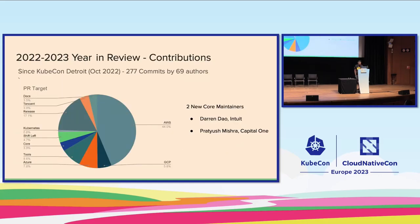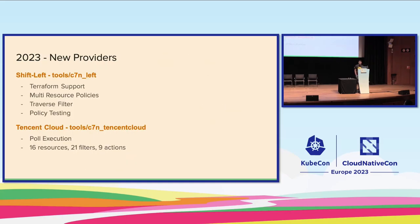Since last October, we've had about 70 authors contribute about 280 different commits across different resources and providers. We've added two new core maintainers: Darren Dow from Intuit and Patrush Mishra from Capital One. We've also added a few new providers — a Terraform provider for evaluating Terraform source code inside your pipeline, and the contribution of the Tencent Cloud provider, which supports multiple resources, filters, and actions, though it doesn't yet support event-based execution.